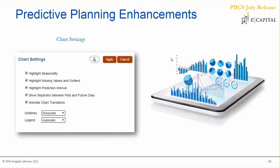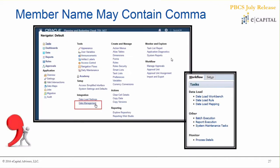Continuing with standard application enhancements, another new feature is that you're now allowed to have commas in member names. More specifically, if you're leveraging Data Management to load data and maintain mappings, it's no longer going to choke on a comma in a member name. A caveat to consider: if you're getting comma-delimited files that don't have double quotes around a member name to distinguish it, it can affect the file you're trying to load, so keep that in mind.